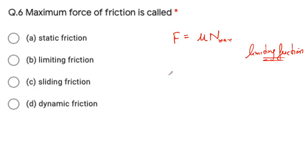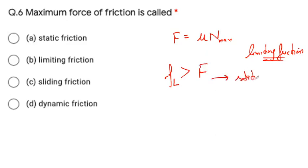Sometimes they also ask you to find the range — total distance covered — and the formula for that is R = U² sin(2θ) / g.